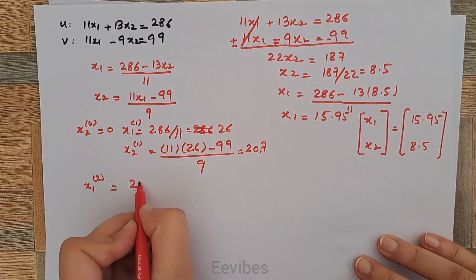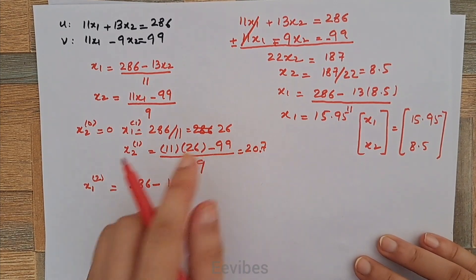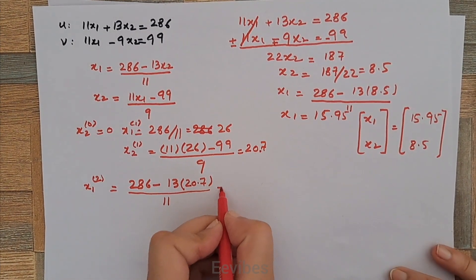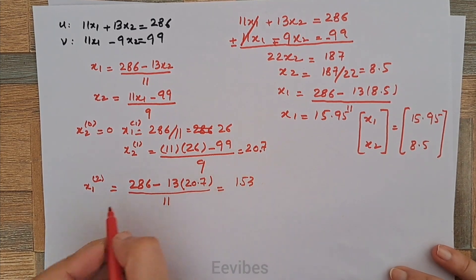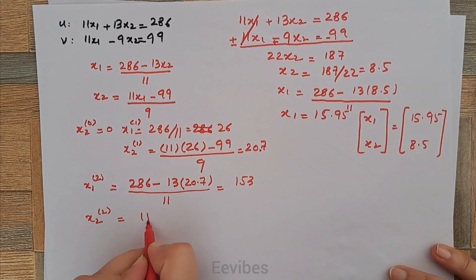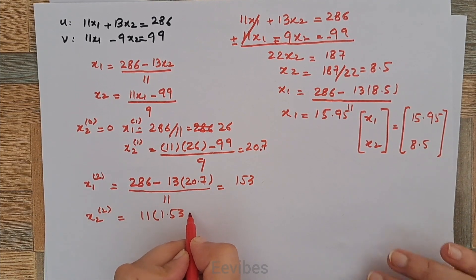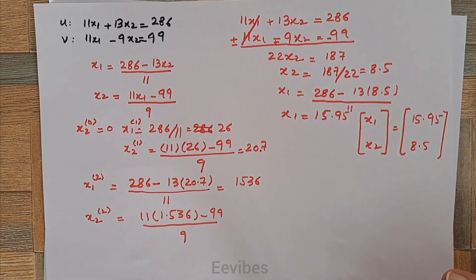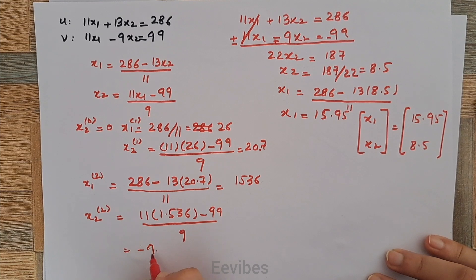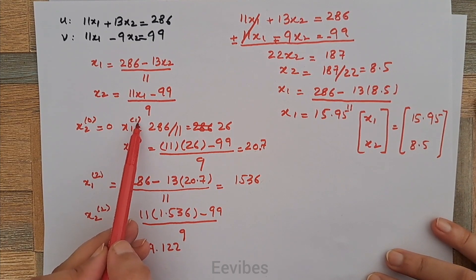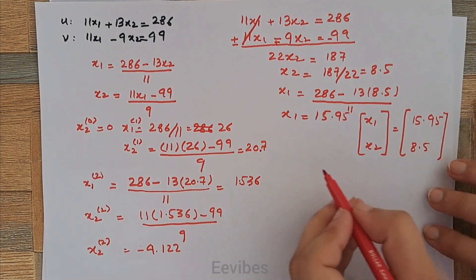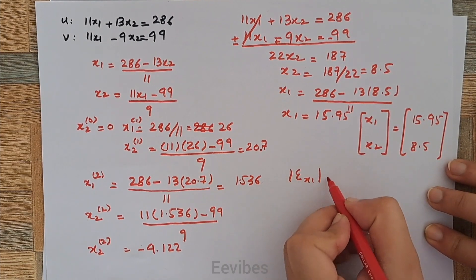In the second iteration, x1 is equal to 286 minus 13 times 20.7, divided by 11. So in the second iteration, x1 equals 1.53. The second iteration value of x2 is equal to 11 times 1.536 minus 99, divided by 9, calculating to three decimal places. x2 came out to be minus 9.122. In the first iteration x1 was 26, while in the second iteration it is 1.53 — a very large difference. Let's determine the percentage relative error in x1.